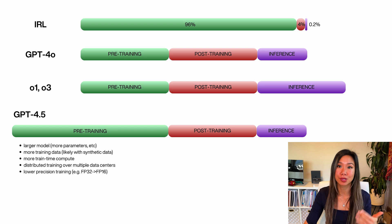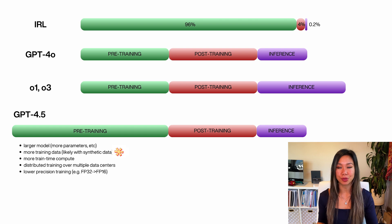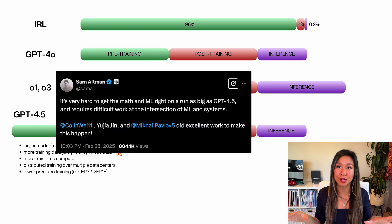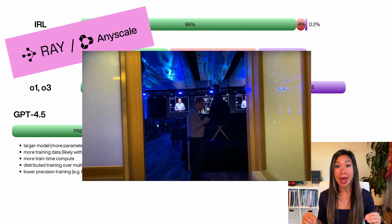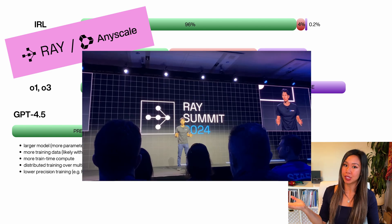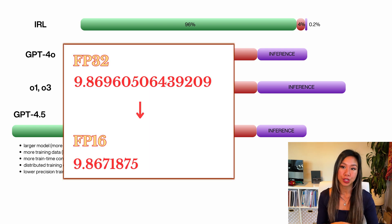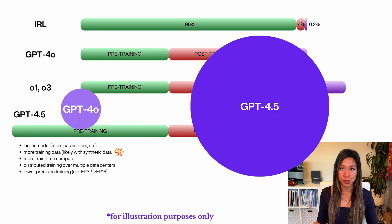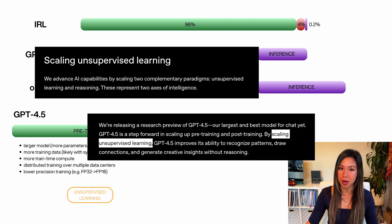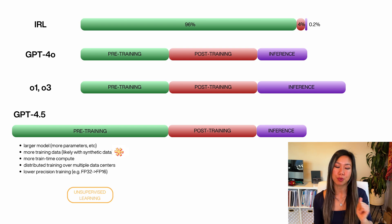Just because you can generate synthetic data for the model to train with doesn't mean it's as nutritious as real data. Bigger models and more data means more compute needed for training. The training process had to be distributed across multiple data centers to handle the memory load. Fun fact: OpenAI uses Ray for its distributed computing framework. Additionally, the precision of the floating points was lowered during training — going from float32 to float16 — to save on memory. This really demonstrates how much bigger GPT 4.5 was compared to 4.0 to require all those changes.